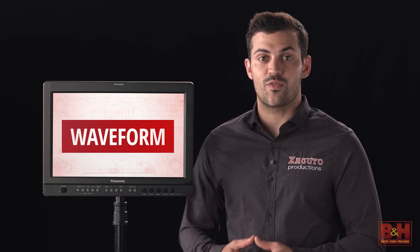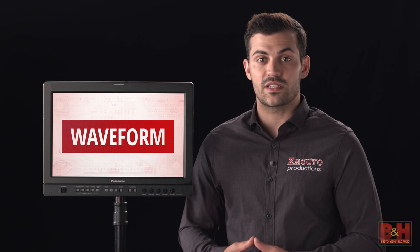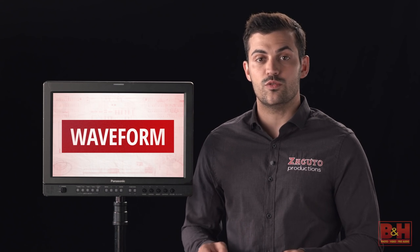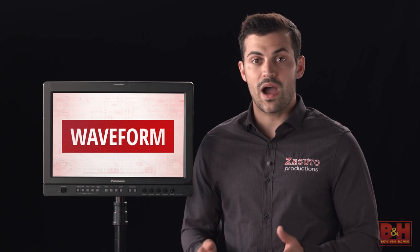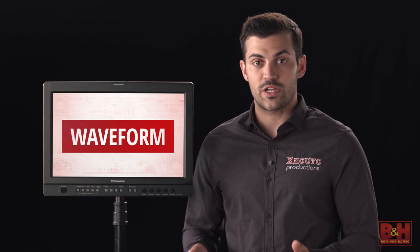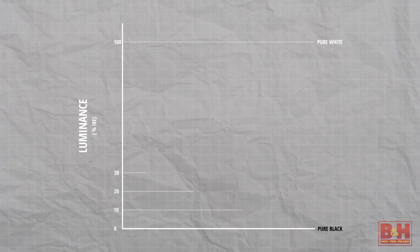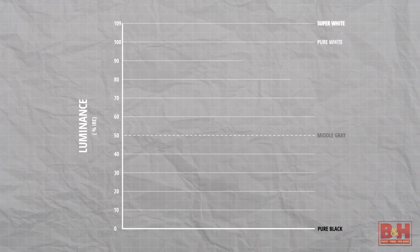The y-axis ranges from 0 IRE — pure black — to 100 IRE — pure white. Anything above 100 is considered super white and is not broadcast safe.